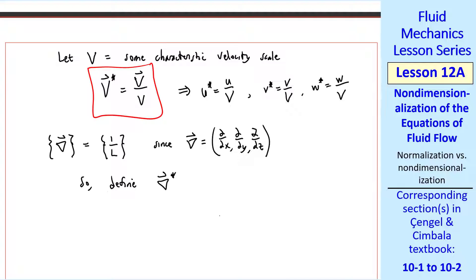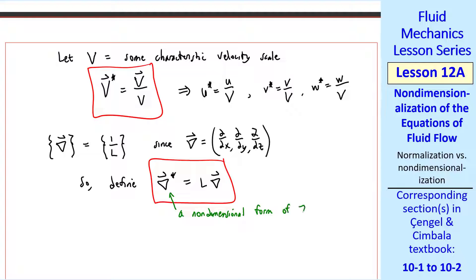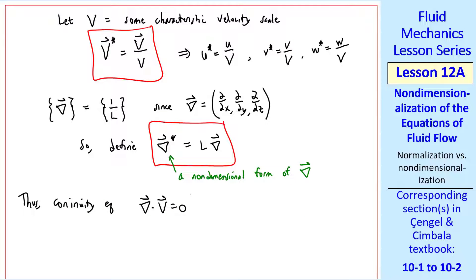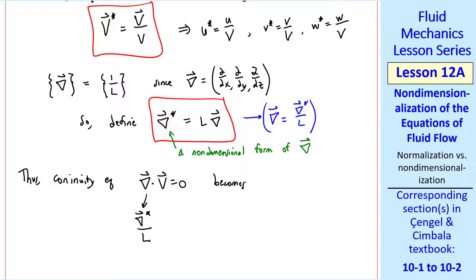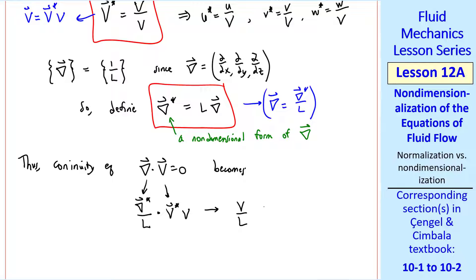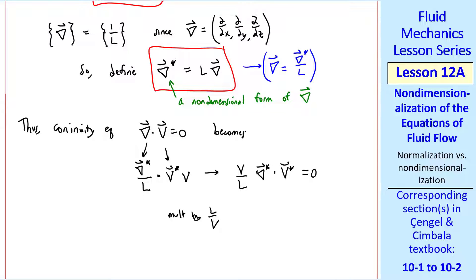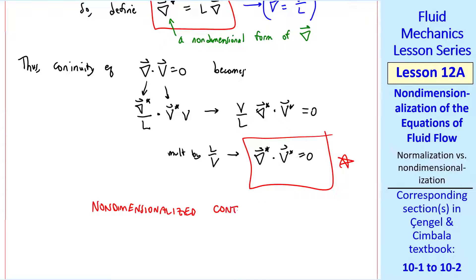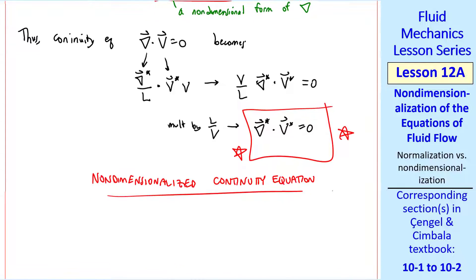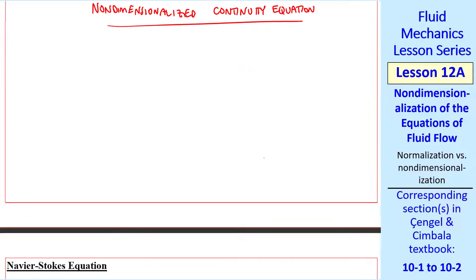So we define del* equal to l times the gradient operator — del* is the non-dimensional form of the gradient vector. Our continuity equation, del dot V = 0, becomes del*/l operating on V*·V equals zero. Since V and l are constants, we bring them outside, and our continuity equation becomes (V/l) del* · V* = 0. Multiplying both sides by l/V, we get del* · V* = 0. This is our non-dimensionalized continuity equation. Notice that our characteristic length and velocity scales have gone away — this won't be the case for the Navier-Stokes equation.